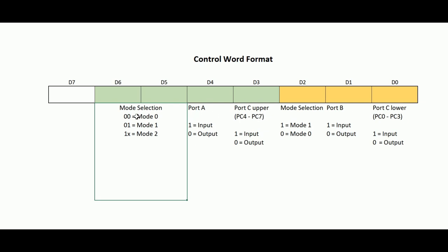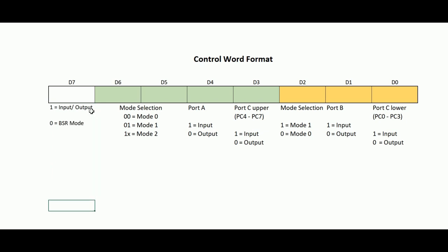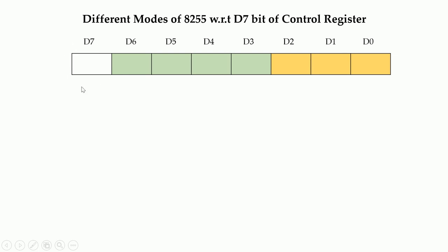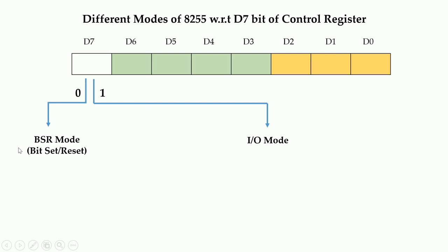Regarding bit D7: if D7 is 1, IC8255 will work in I/O mode; if D7 is 0, it will work in BSR mode (Bit Set Reset mode). The functionality of D7 determines the main behavior of IC8255. In BSR mode, individual bits of Port C can be set to 1 or reset to 0, and this does not affect the I/O mode.